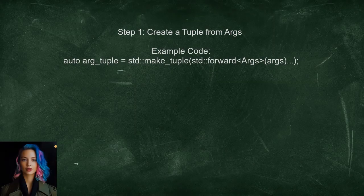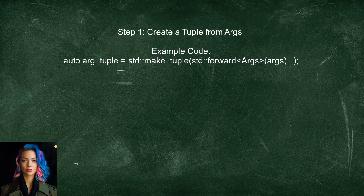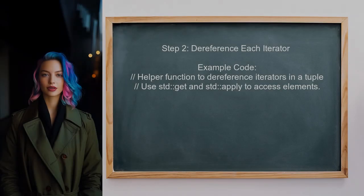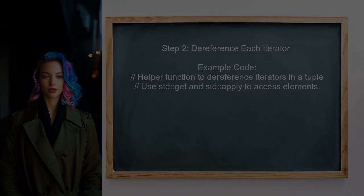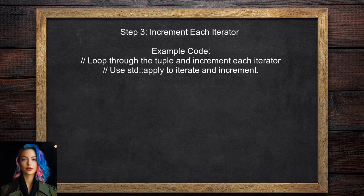To begin implementing the Cartesian product function, the user should first create a tuple from the variadic arguments. This can be done using the standard library function make_tuple. Next, the user needs to dereference each iterator in the tuple, which will allow access to the elements of each input range. This can be achieved using a helper function that iterates through the tuple. For the third step, the user should increment each iterator in the tuple sequentially to generate all possible combinations.